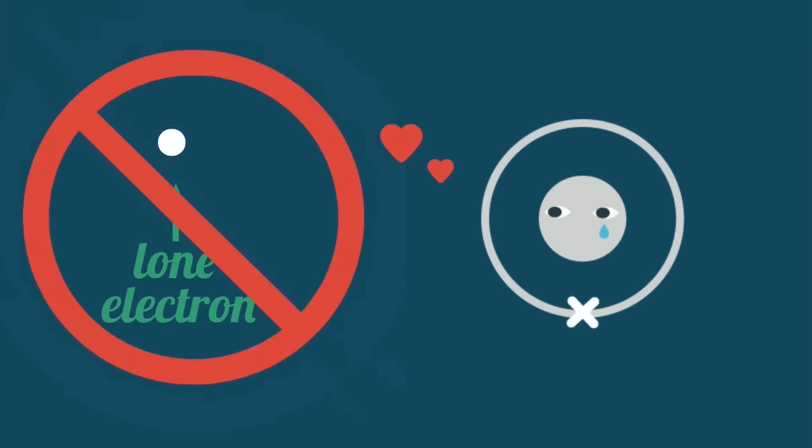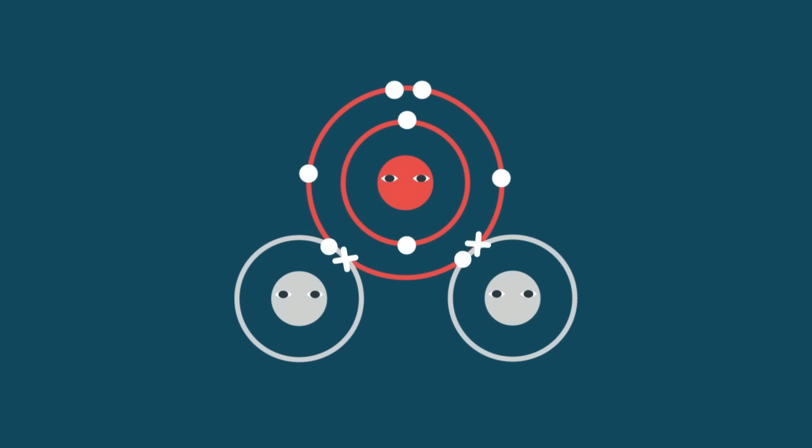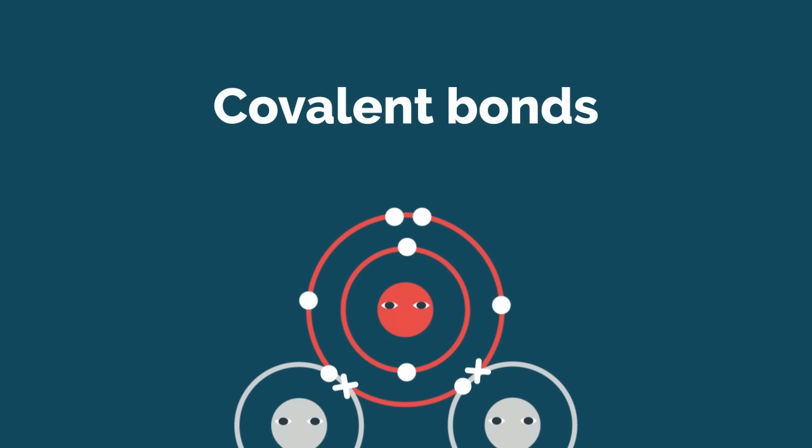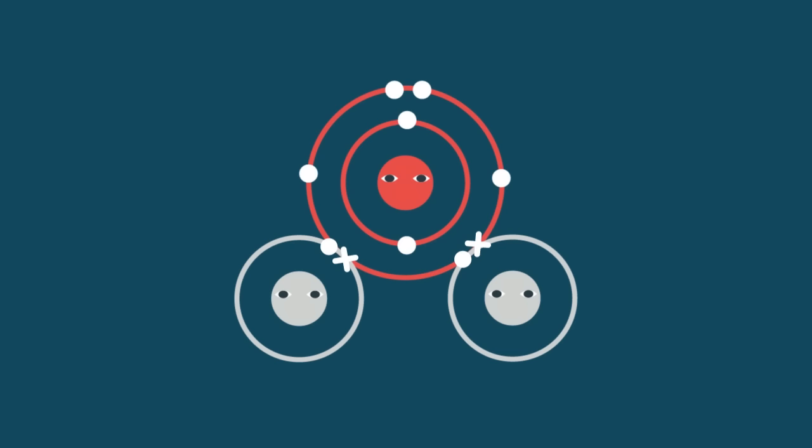There aren't usually lots of spare electrons just flying about the place, so the atoms share their electrons as shown, forming covalent bonds. Now all three atoms have full outer shells and are very happy. A water molecule is created.